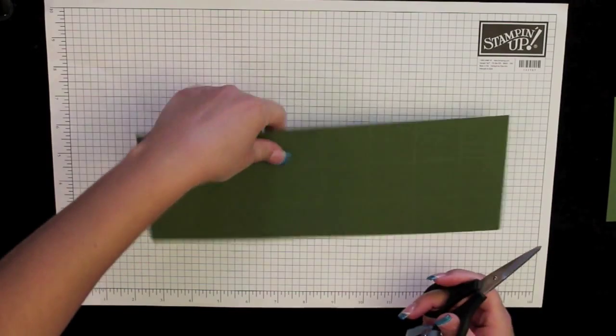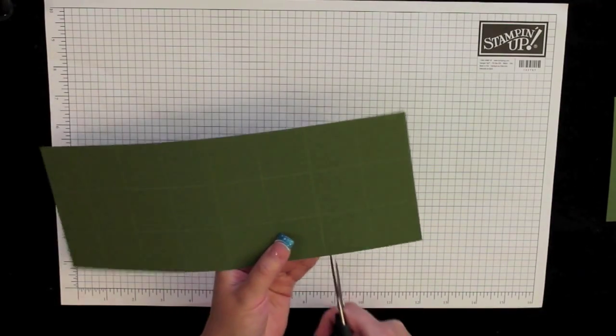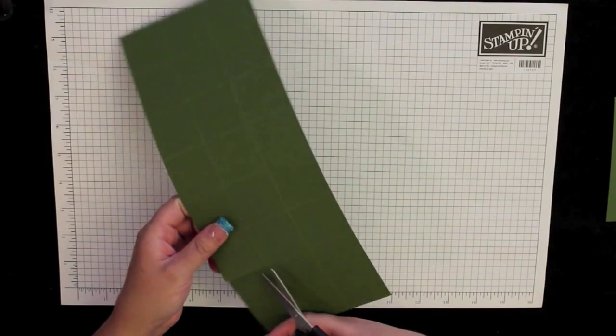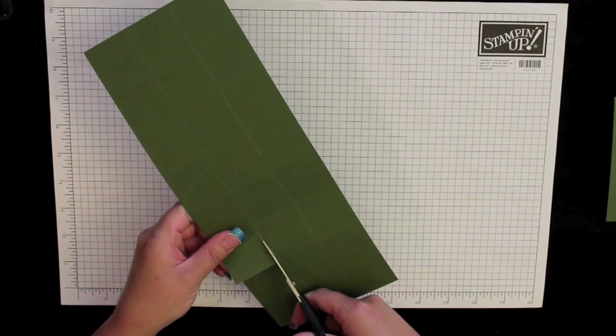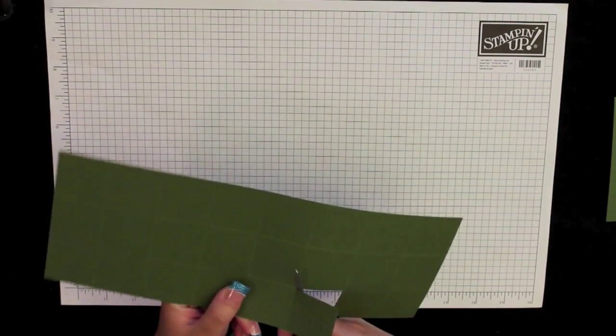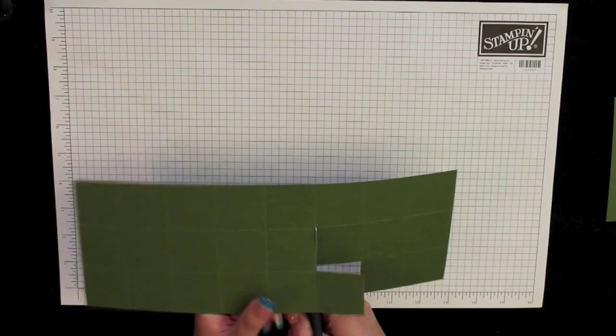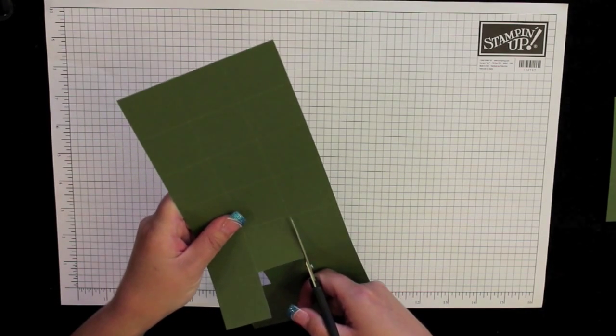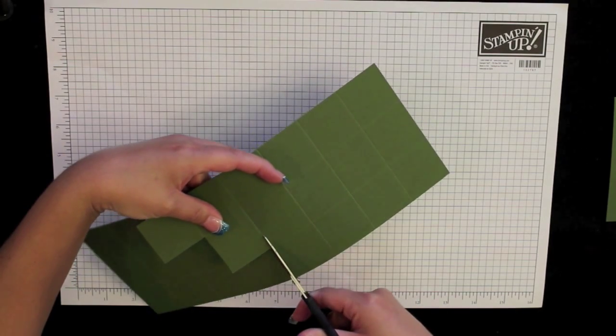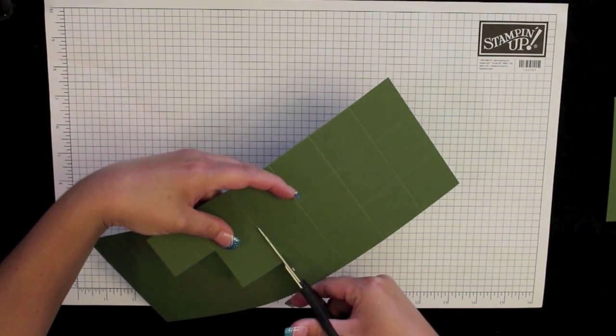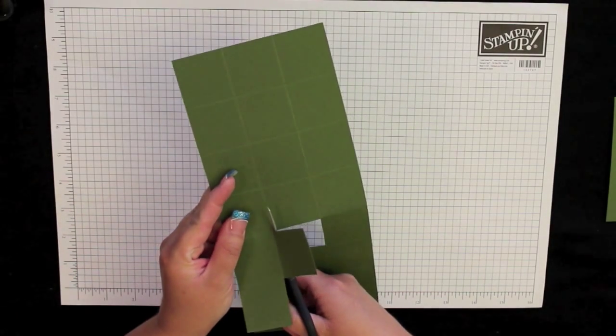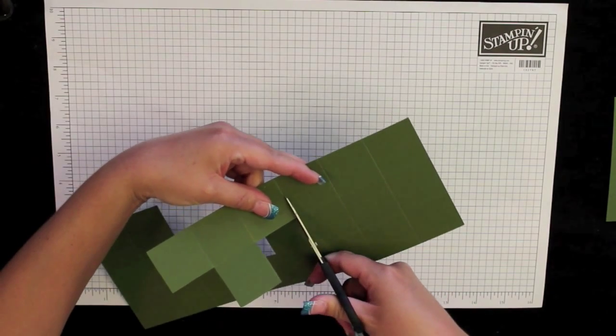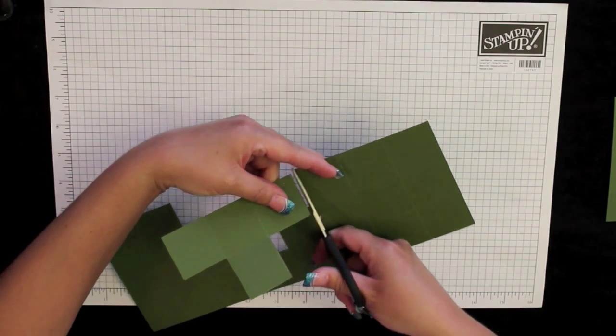So grab your paper snips, come over two, cut down, cut over one, down again, over one, go back up, over one, and cut that piece out and set that aside.